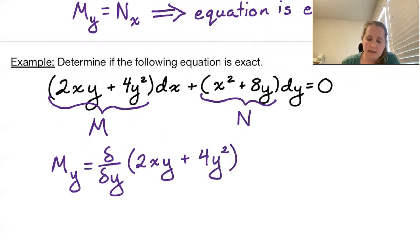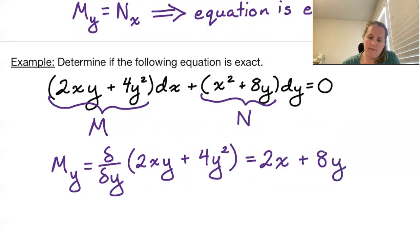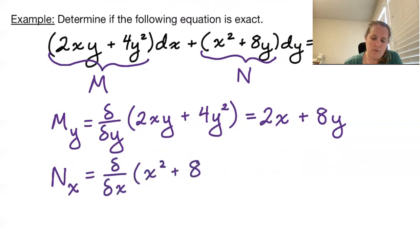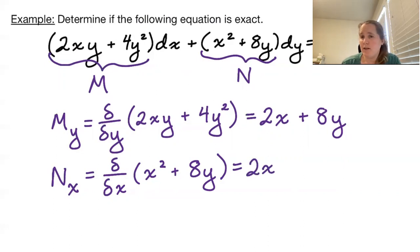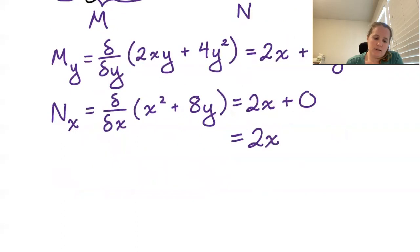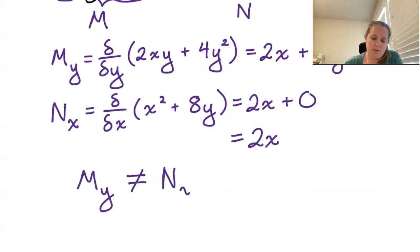Treating x as a constant, the first term goes to 2x, and the second term gives plus 8y. Next, we take the partial with respect to x of N, which is x squared plus 8y. Treating y as a constant, the first term goes to 2x, and 8y has no x so it contributes zero. So the partial with respect to x of N is just 2x. In this case, the partial with respect to y of M — which is 2x plus 8y — is not equal to the partial with respect to x of N, which is 2x. So the equation is not exact.